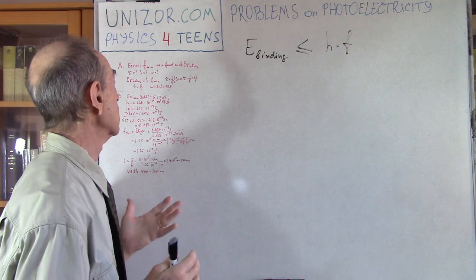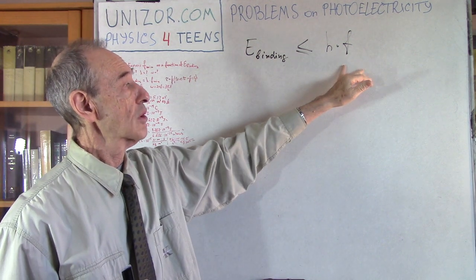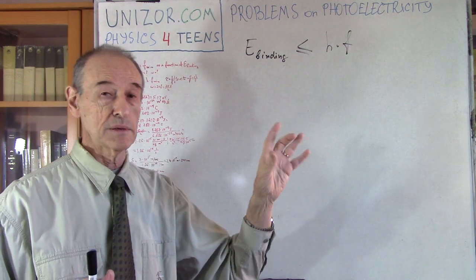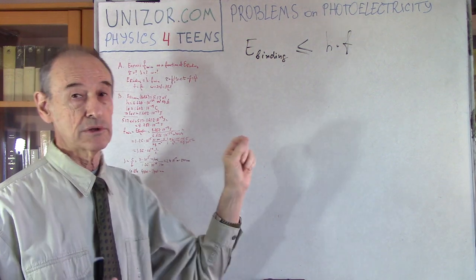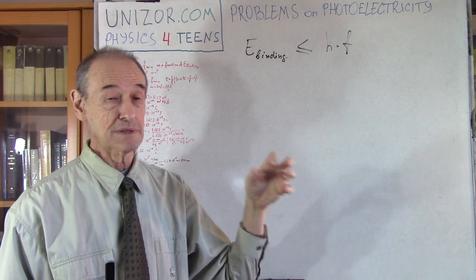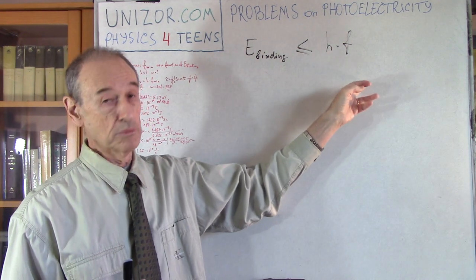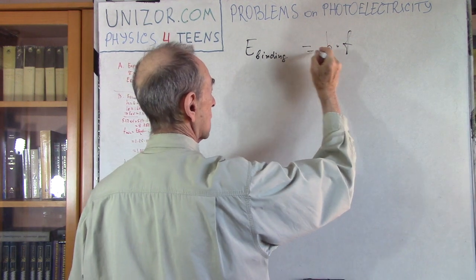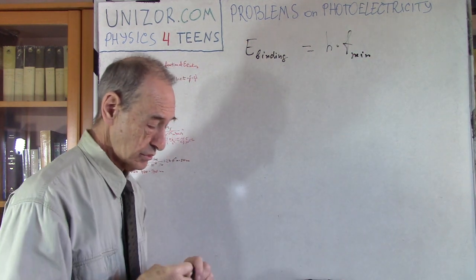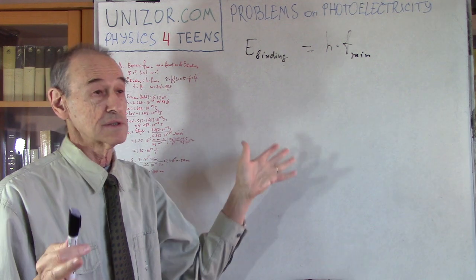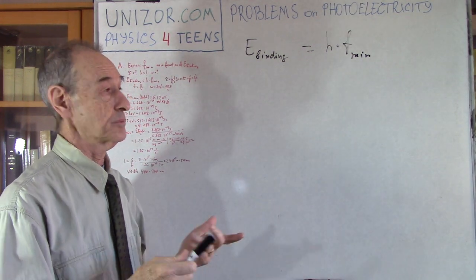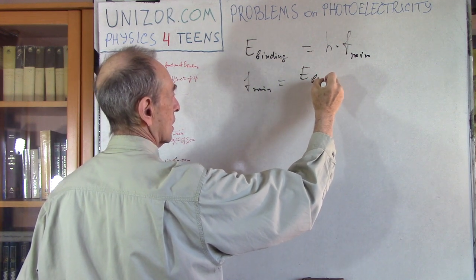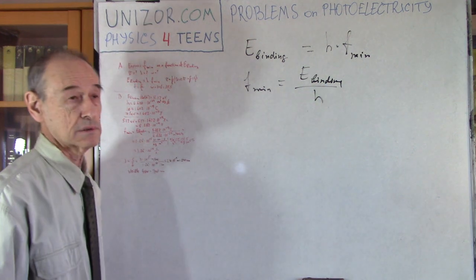My first problem is very simple. I have to determine all the light characteristics like frequency, angular frequency, wavelengths, and the period if I know the binding energy of specific electrons in a specific shell. Minimum frequency - the equality means that this is minimum. F minimum is equal to binding energy divided by Planck's constant. Simple enough.